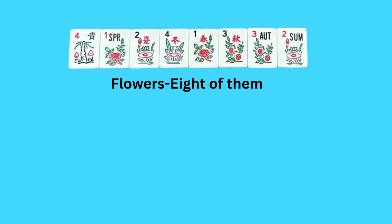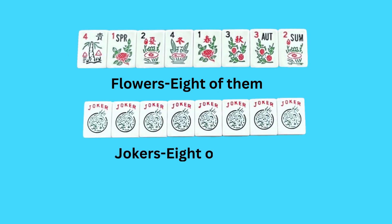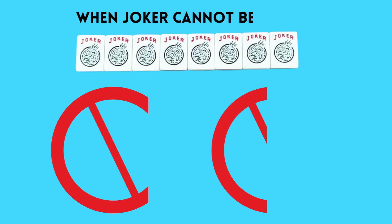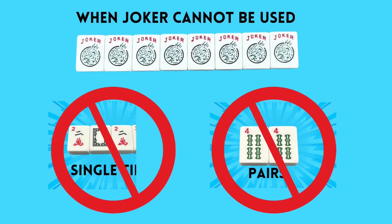The next tiles are the flower tiles, and there are eight of these. Please note that on the tile there are numbers and some letters, which are actually abbreviations of the seasons. These mean absolutely nothing when playing American Mahjong. And then we have our Joker tiles, and there are eight of these tiles. We're going to be talking a lot about Jokers in the coming lessons. But I do want to mention that there are times when you cannot use Jokers, and that would be when using them in a single grouping or in a pair.